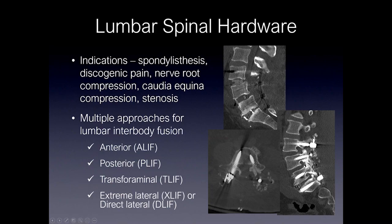Lumbar spinal fusion indications include spondylolisthesis, discogenic pain, nerve root compression, cauda equina compression, and stenosis. Multiple approaches for lumbar interbody fusion can be performed. You can have anterior or posterior approaches, transforaminal approaches, as well as extreme lateral approaches, or direct lateral, where you're coming from the side of the abdomen to enter into the lumbar spine and disc space.